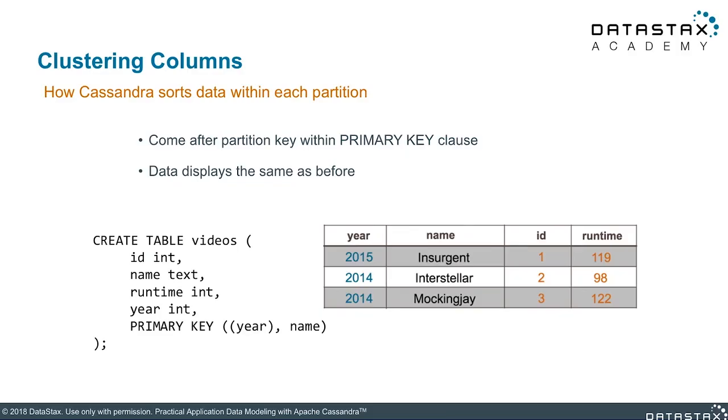Let's talk about clustering columns. The other half of the primary key, besides partition keys, are clustering columns. These are combined to make your data model awesome. Clustering columns are an important part of the data model because they define certain parts of the sorting and uniqueness.